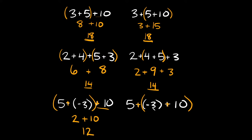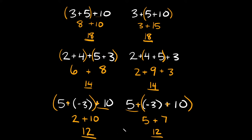And then on this side, we have negative 3 plus 10. Negative 3 plus 10 is equal to positive 7, and then we'll bring down this 5 plus part. So 5 plus 7 is again equal to 12. Same answer.